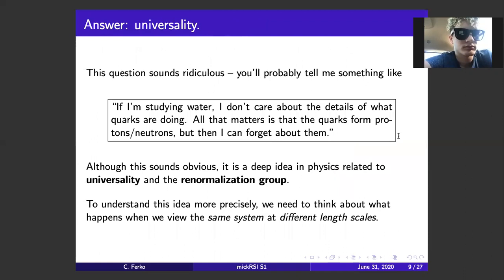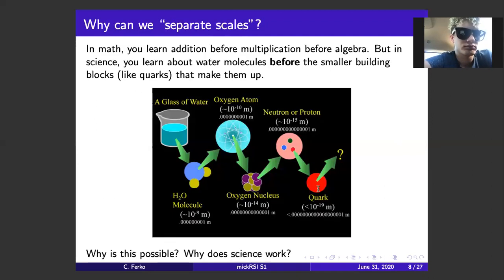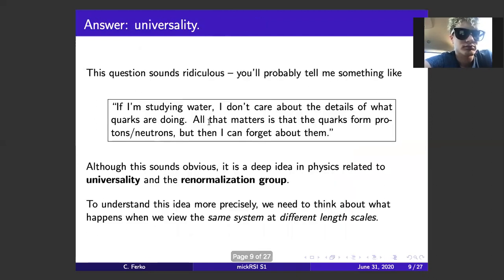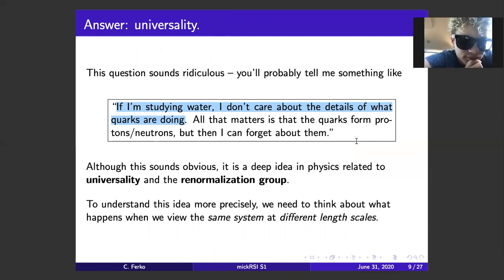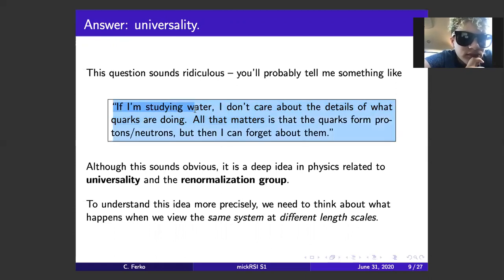Why is it possible to understand the big picture of a glass of water without first knowing all of the basic building blocks and quarks that make it up? Of course, if I ask you that question, you'll say it's kind of a silly question — how could the behavior of these quarks possibly matter for understanding a glass of water? I don't really care what the quarks are doing because I know they're going to form some sort of stable object. So if they do that, I can just study the conglomerate and forget about the details. Despite being naive, this answer leads to some deep ideas in physics: universality and the renormalization group.